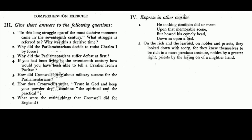Comprehension Exercise 3: Give short answers to the following questions. 1. In this long struggle, one of the most decisive moments came in the 17th century — what struggle is referred to? Why was this a decisive time? 2. Why did the parliamentarians decide to resist Charles the First by force? 3. Why did the parliamentarians suffer defeat at first? 4. If you had been living in the 17th century, how would you have been able to tell a Cavalier from a Puritan? 5. How did Cromwell bring about military success for the parliamentarians? 6. How does Cromwell's order 'Trust in God and keep your powder dry' combine the spiritual and the practical?